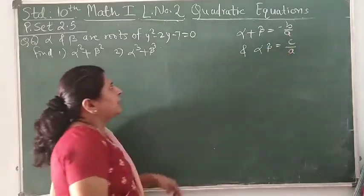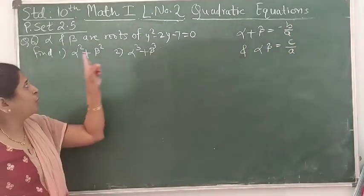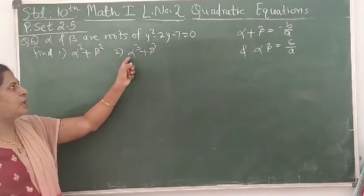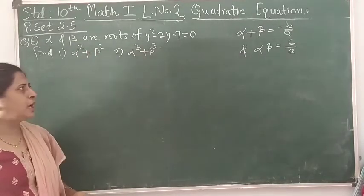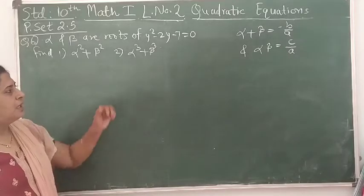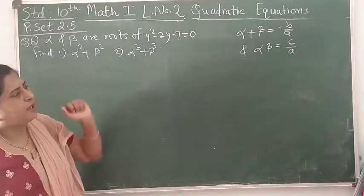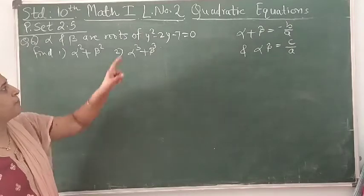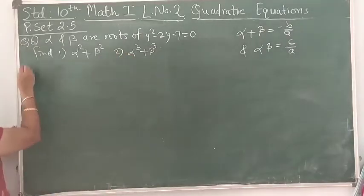These values we can get easily, but how do we get α² + β² and α³ + β³? That is what we have to figure out. Let's first find those values and see how they will be helpful to us.